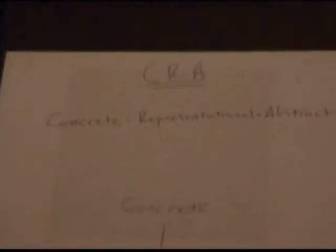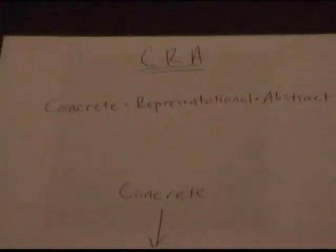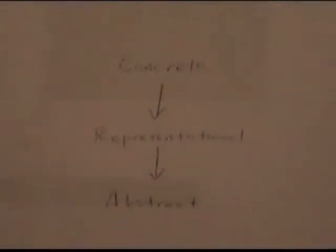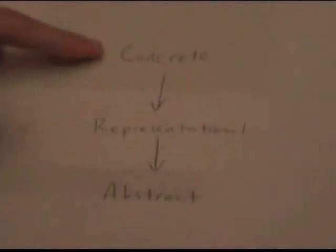This method is called CRA, which stands for Concrete Representational Abstract. How it works is when you want to teach a concept, you start with a concrete example of that concept, something tactile, something that the kids can mess with, can fool around with, can actually touch.